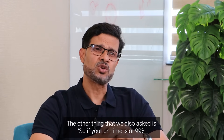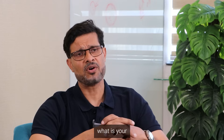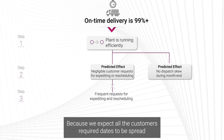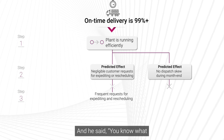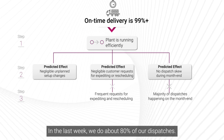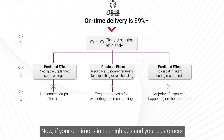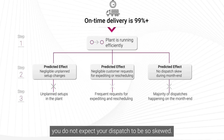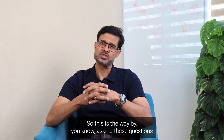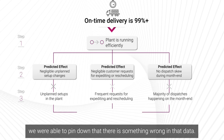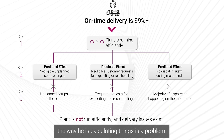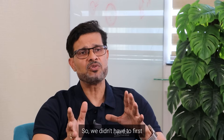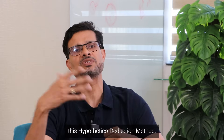We also asked: if on-time is at 99%, how are dispatches spread? We would expect customer required dates to be spread across the month. He said that in the last week they do about 80% of dispatches. If on-time is in the high 90s and customer due dates are staggered throughout the month, you would not expect dispatch to be so skewed. By asking these predicted-effect questions, we pinpointed that something was wrong with the data — the way on-time was being defined and calculated was the issue. We established truth through the hypothetical deduction method without needing to forensically examine all the data.